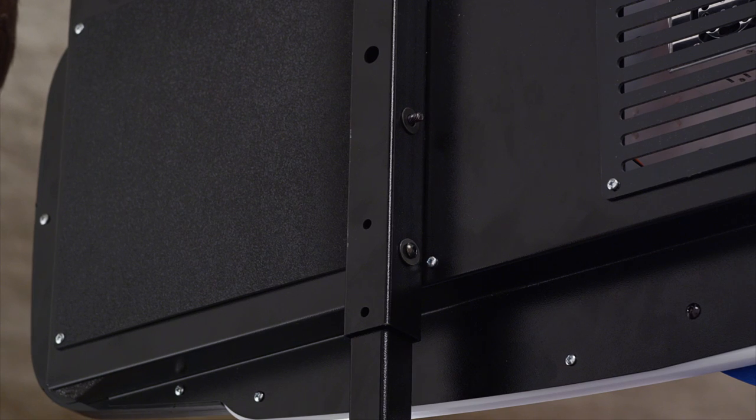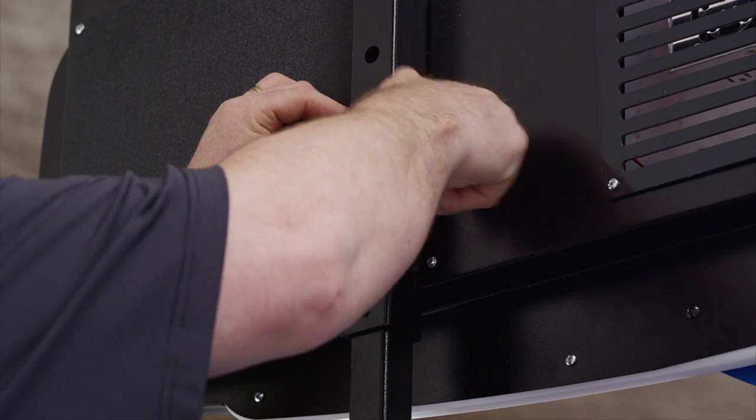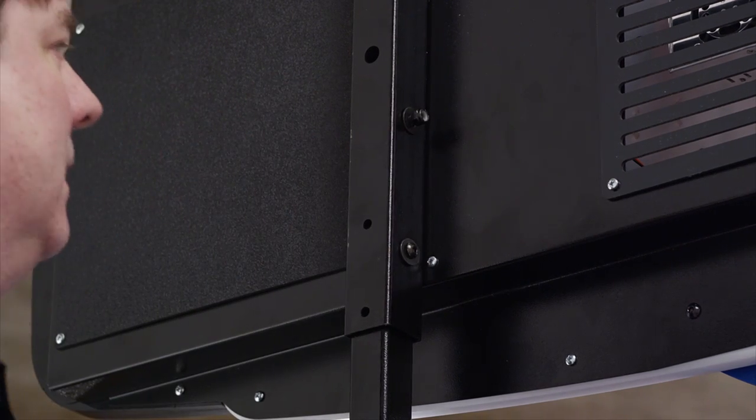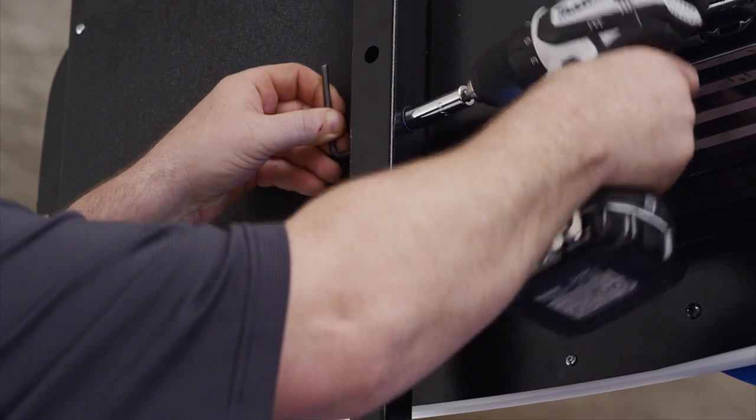Insert one bolt, washer and nylon nut to the side of the support pole. Use a 5-32nd Allen wrench to hold the bolt and secure the nylon nut with a 7-16th socket wrench. Repeat for the other side.